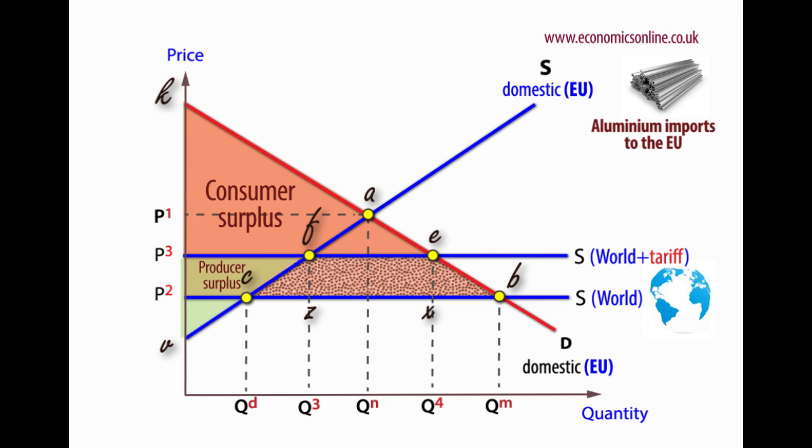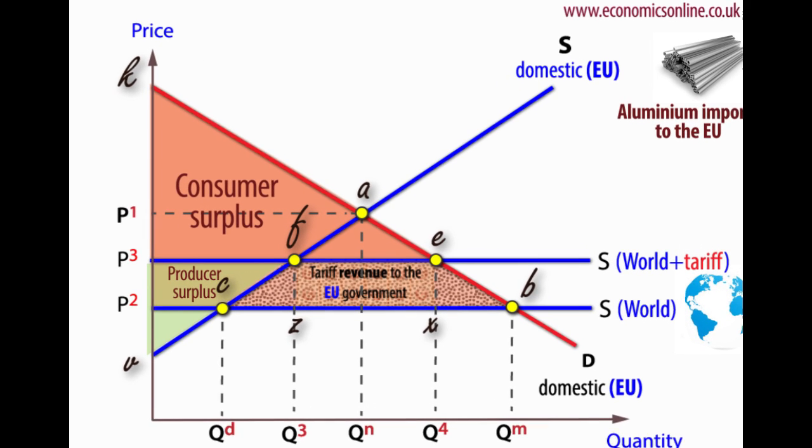The net effect is a loss of consumer surplus, of the area F, E, B and C.